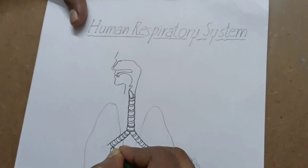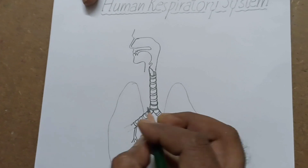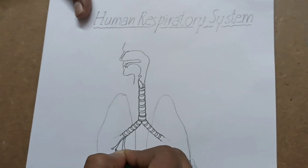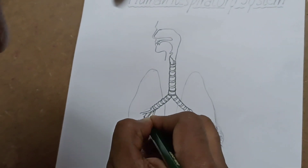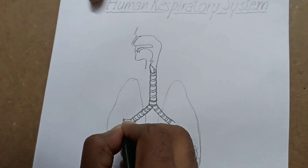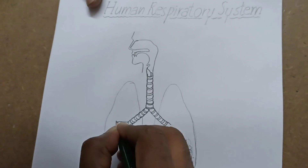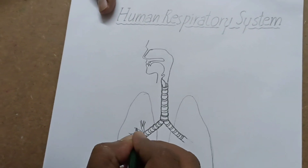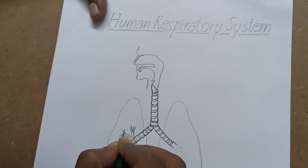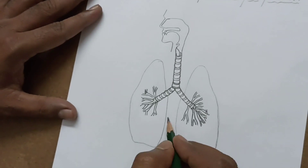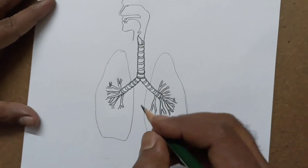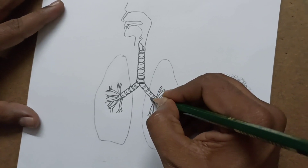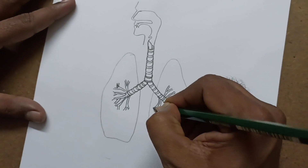Continue drawing C-shaped rings along the bronchi. Finish it. Now we have to draw some lobes like this.